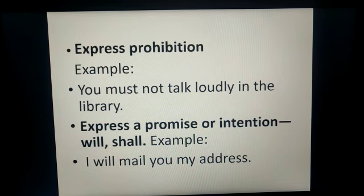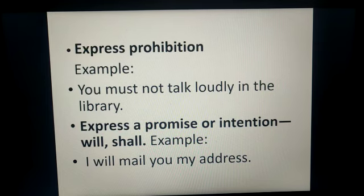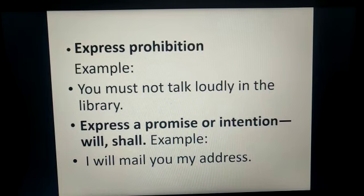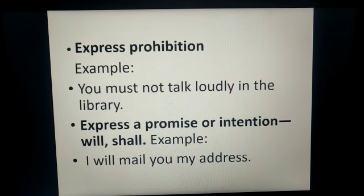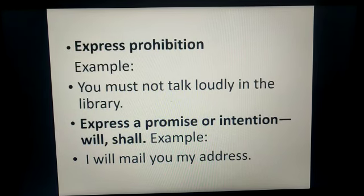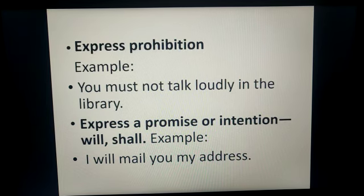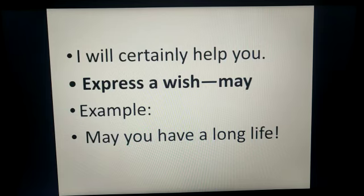If we want to express a promise or intention, we use will and shall. Normally we use will with the third person — he, she, it, they — and shall with I and we. But when expressing a promise or intention, it reverses: with I and we we use will, and with other subjects we use shall. For example, 'I will mail you my address' — this is a kind of promise, so with I, I have used will. Similarly, 'I will certainly help you' — I am making a promise and showing determination.